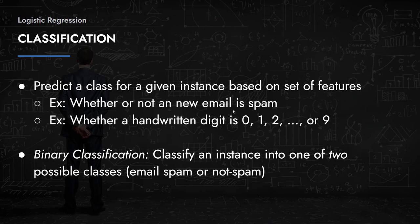A more complex classification problem would be predicting whether a handwritten digit corresponds to 0 through 9 — a total of 10 classes. You know there are only 10 possibilities, so this is also a classification problem, but it's multi-class. You're predicting more than one class, but it's still not a continuous variable, so it can't be solved with a regression model.